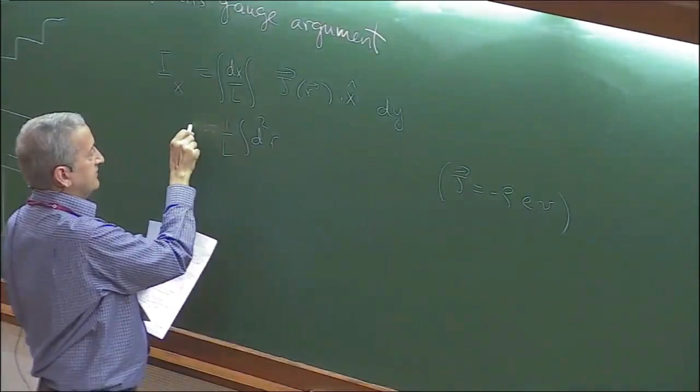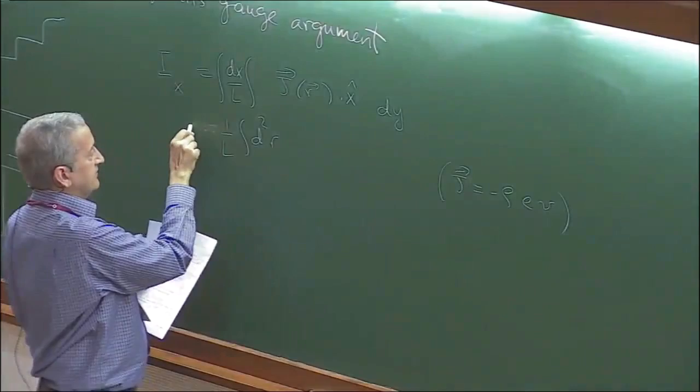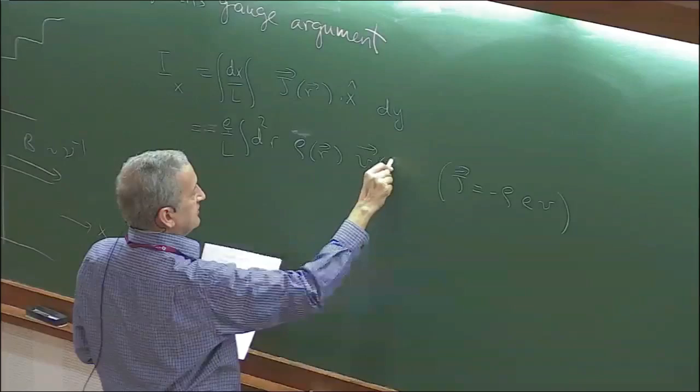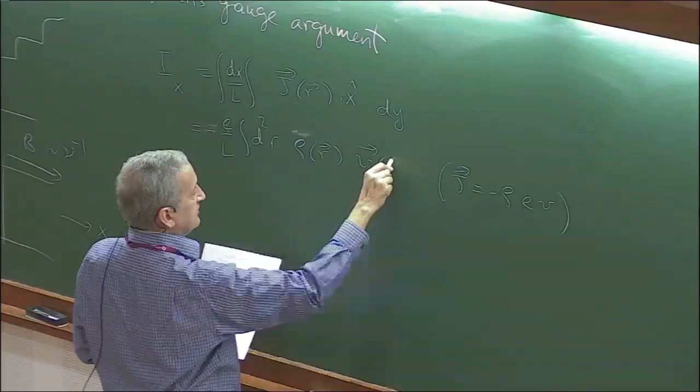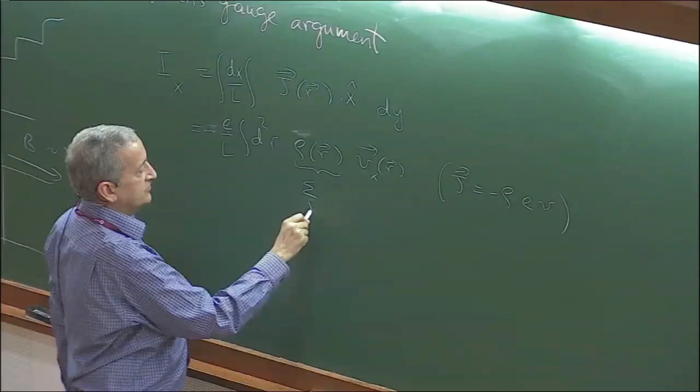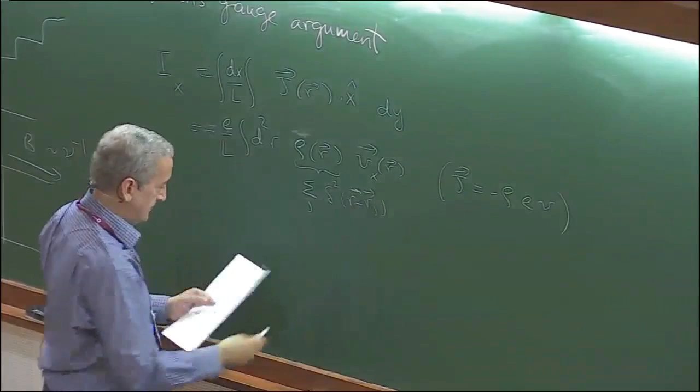I can choose a line at any point along the x-direction and get the same answer, so the result does not depend on x. I can integrate over x but must divide by the length of the sample. The current j_x has the formula: there is a negative sign, a factor of e, density, and the velocity along the x-direction. Writing the density as a sum over j, I get this formula for the current.